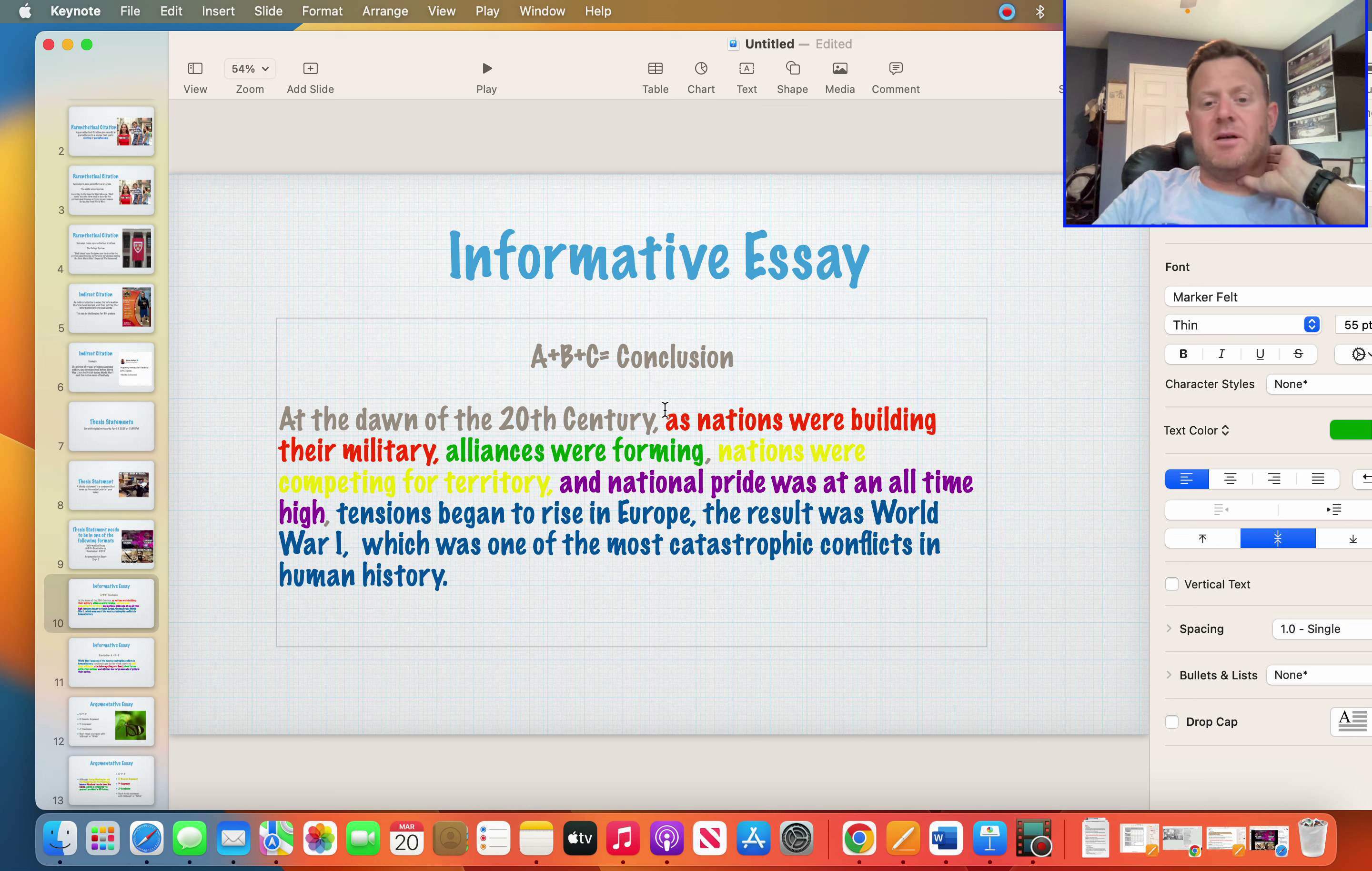So I went with A plus B plus C equals conclusion. And in this case, this one actually works better. But A, B, and C are just details. So you're going to pull out your three main details that you need, and then you're going to add the conclusion or the end. Like, what did you come to? What was the conclusion?